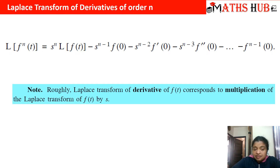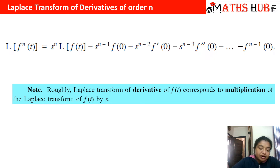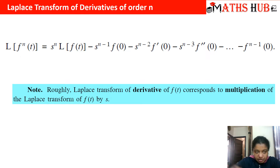So roughly what is happening with the derivative formula: on the left hand side we have the derivative, and on the right hand side we are multiplying by s. So taking the derivative on the left corresponds to multiplying by s on the right.